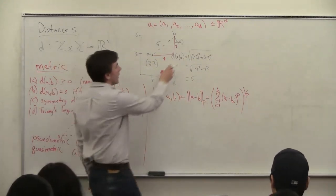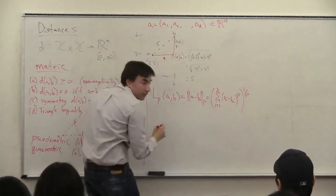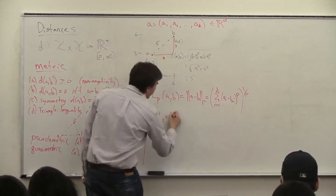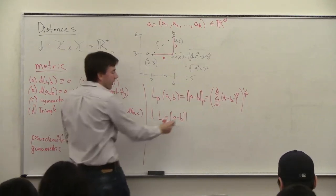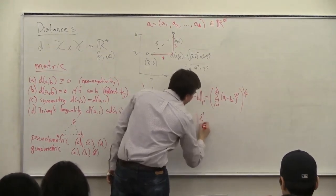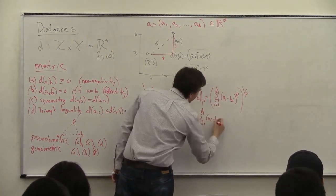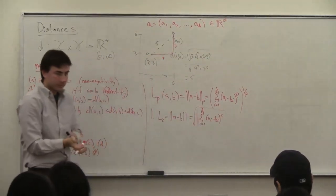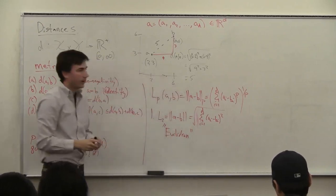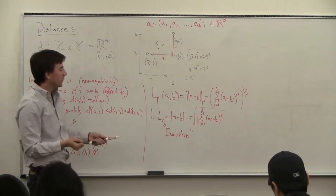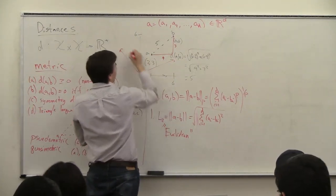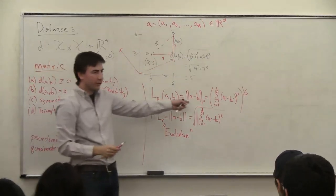We've looked at a special case: the L2 distance. If you drop the norm subscript, you usually assume it's the L2 distance. This is the square root of the sum of squared differences — exactly the Euclidean distance formula. This is known as the Euclidean distance because it's the straight-line distance, and it's the only distance where if you rotated the axes, the distance stays the same. Any other Lp distance does not have this rotation invariance property.